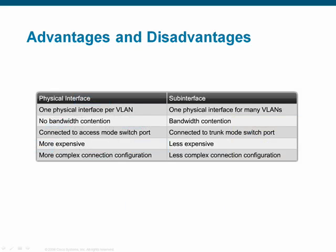As you can see, router-on-a-stick interVLAN routing provides many advantages over traditional interVLAN routing over multiple physical router interfaces, the most apparent of which is cost. Networks with many different VLANs have a high cost if multiple physical router interfaces must be purchased. One drawback of using sub-interfaces is that the VLANs must now share the bandwidth of a single physical interface. However, adding another physical interface can relieve some of this contention. Many organizations use the router-on-a-stick configuration.